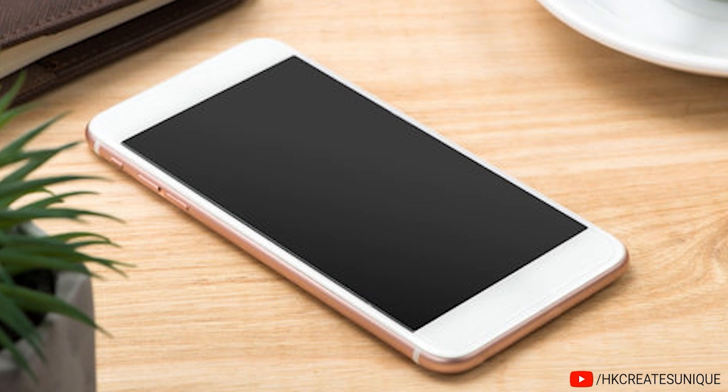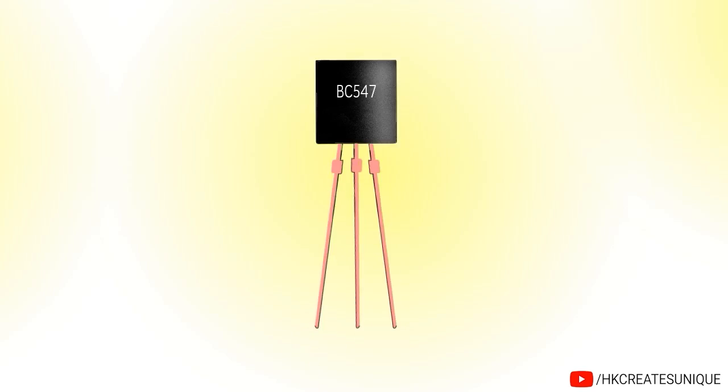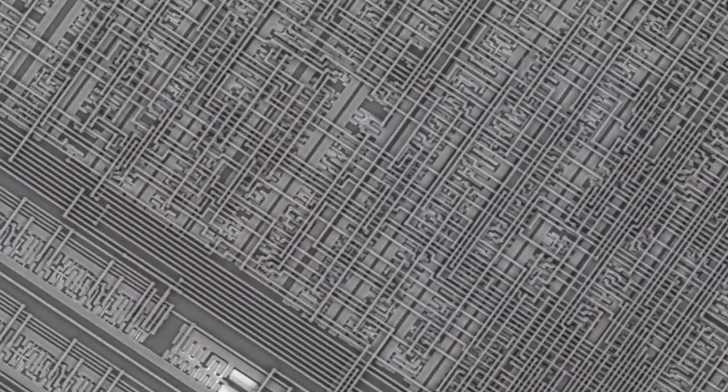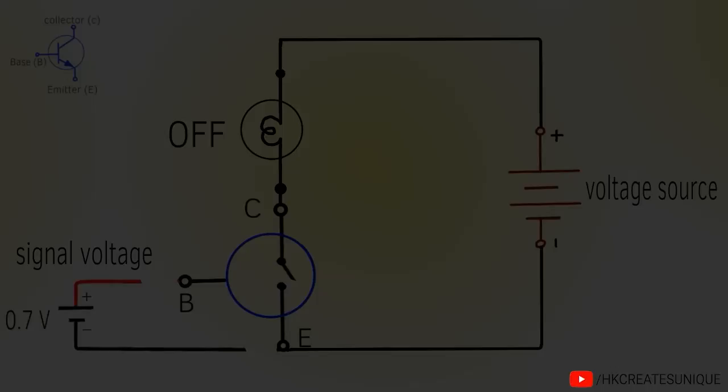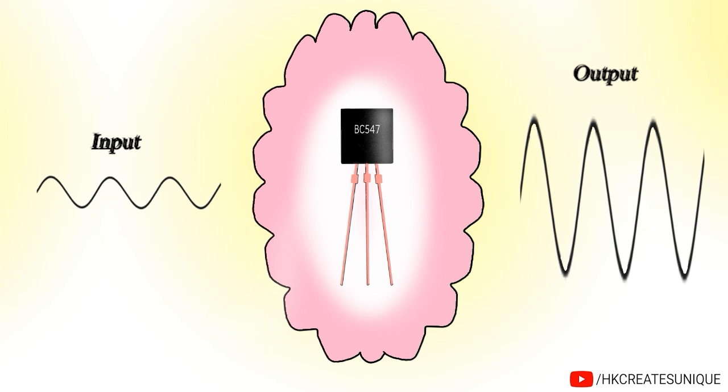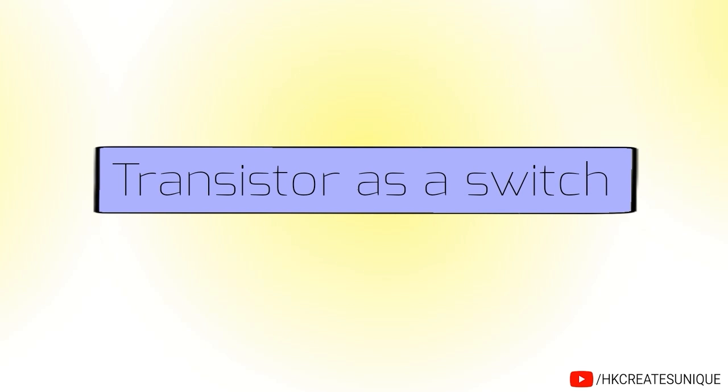The device that made computers incredibly fast is the transistor. A processor may contain billions of tiny transistors in it. A transistor can be used as a switch or as an amplifier. In this video, I will show you how to use a transistor as a switch.